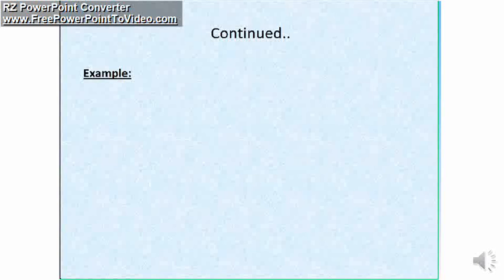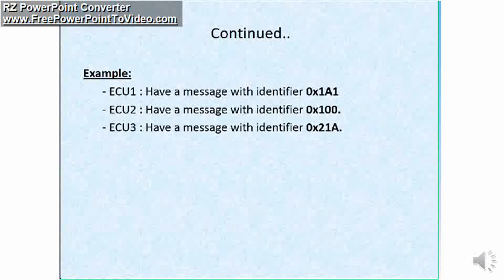So let's see an example how CAN nodes prioritize messages. Let us consider, I have ECU1 with message identifier 1A1, ECU2 with message identifier 100, and ECU3 with message identifier 21A. These identifiers are in hexadecimal format. And here I am considering standard frame format of the CAN.